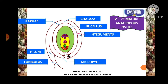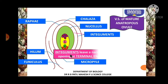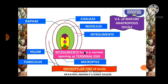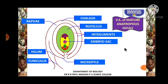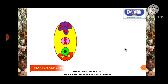The region where the integuments are not present is called micropyle. Integuments leave a narrow opening at the terminal end, and that is called micropyle. The micropylar end of the ovule is important because around 80 to 90 percent of pollen tubes make their entry into the embryo sac through the micropyle. So it is the region for the entry of the pollen tube.